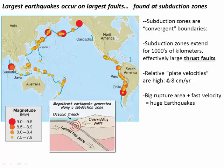We also know subduction zones have very high relative plate velocities — how fast, for example, the Pacific plate is being subducted under South America. At many subduction zones that's going to be four to eight centimeters per year, and even a bit higher in some places. So if we have a lot of area and we have to accommodate a lot of plate motion, that means we're going to have big earthquakes and they're going to happen pretty often.